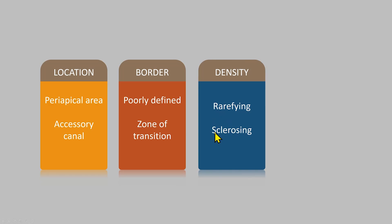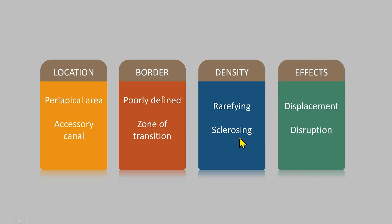The density could be either rarefying or sclerosing — in our case we saw both features: a radiolucent area and a sclerotic area. The effects on neighboring structures would be displacement of those structures. We saw displacement of the sinus floor, and on the mandibular arch you may see displacement of the inferior alveolar canal. If the lesion is large, it can also displace a tooth.